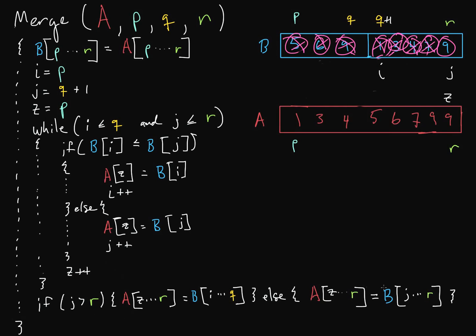We have this last line which copies the rest of one of these two sides into the rest of A. Since J is not greater than R — J is equal to R — we go to the else branch and copy from J to R (just this one element in our case) into A from Z to R. We copy this down, and it's obviously the same element, but we do it anyway. And then we're done. That's how we do the merge portion of merge sort.